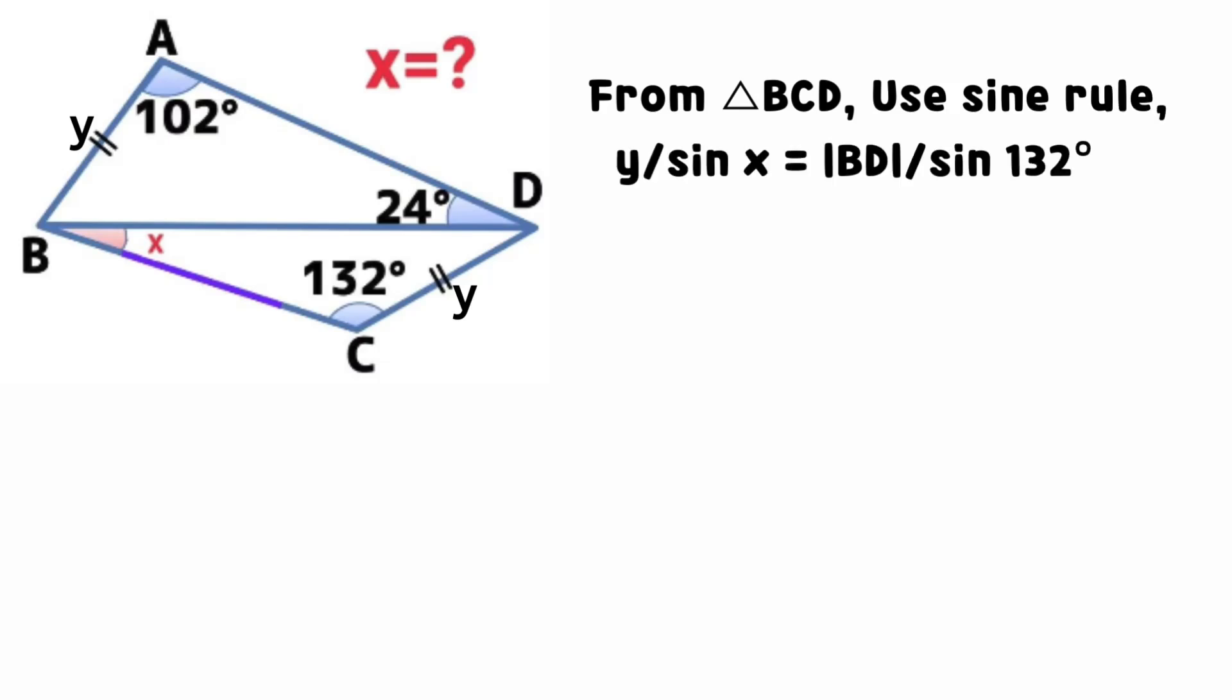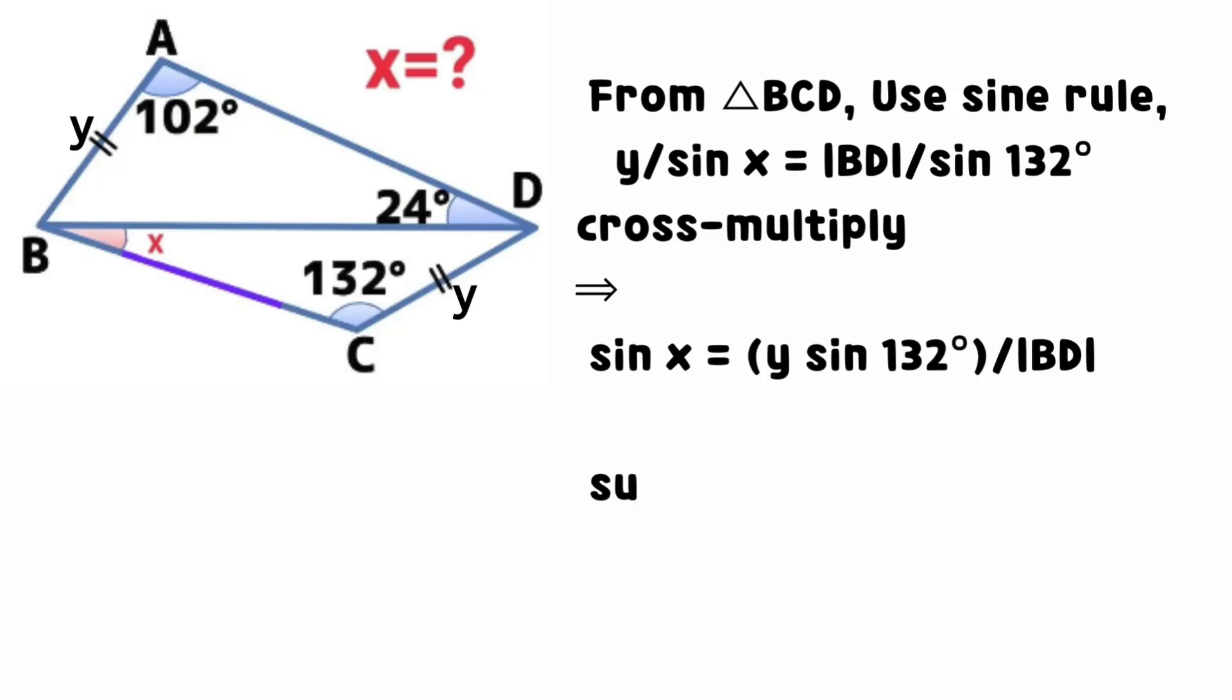From triangle BCD, using sine rule, we have that y divided by sine x equals line BD divided by sine 132 degrees.